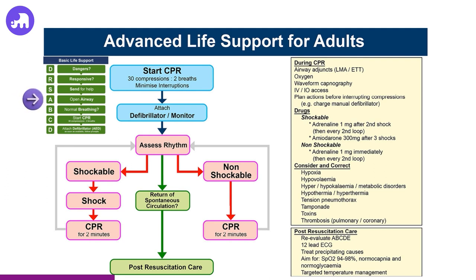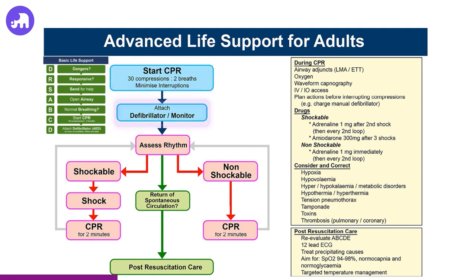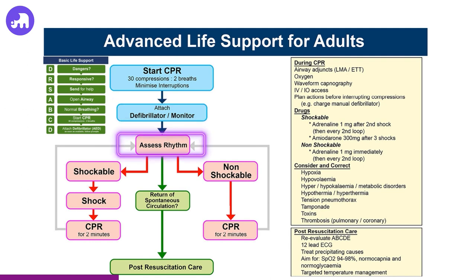Assess airway and check breathing: look, listen and feel for normal breathing. If the patient is not breathing or breathing abnormally, such as agonal gasps, proceed to CPR. Start with a compression to ventilation ratio of 30 compressions to two breaths. Defibrillation: as soon as an AED or manual defibrillator is available, apply pads and assess the cardiac rhythm. If a shockable rhythm such as VF or pulseless VT is detected, deliver a defibrillatory shock.